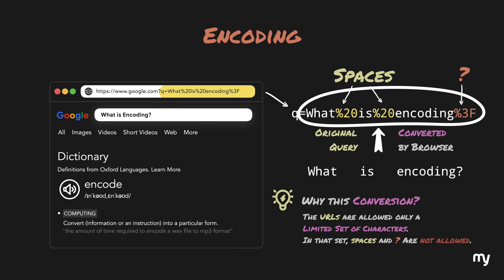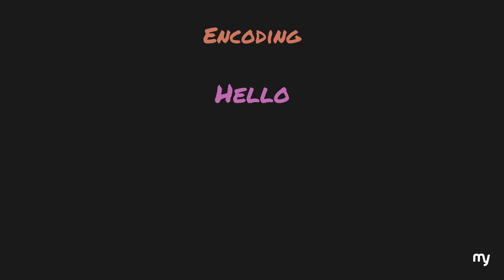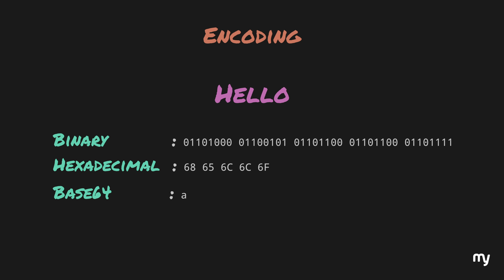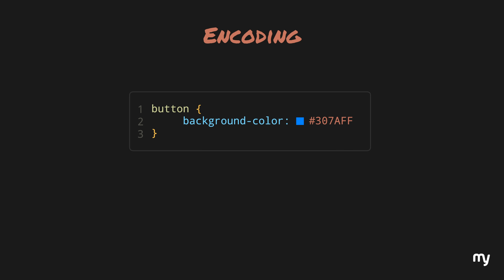Similar to this, data can be encoded to other forms as well. For example, the text 'hello' can be converted into many different forms — binary, hexadecimal, or base64. Encoding is not only limited to transmitting data, but has other uses as well. For example, if you work on the frontend with CSS, you might have seen the color codes which have the RGB values. Those values are usually written in hexadecimal for its compact nature.